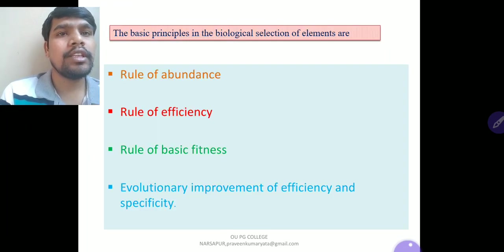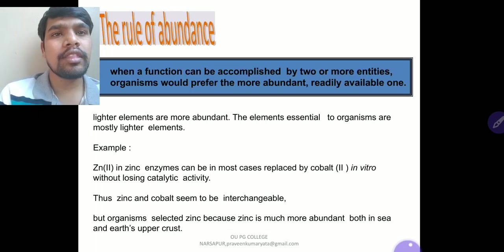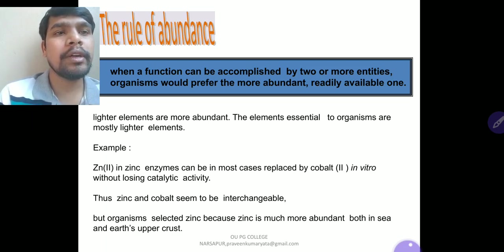The basic principles in the biological selection of elements are four: the rule of abundance, rule of efficiency, rule of basic fitness, and evolutionary improvement of efficiency and specificity. First, the rule of abundance: when a function can be accomplished by two or more entities, organisms would prefer the more abundant one — the readily available one. Lighter elements are more abundant, and the elements essential to organisms are mostly lighter elements.